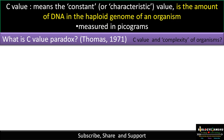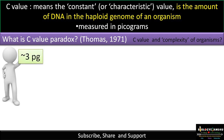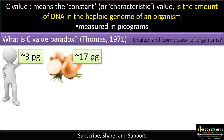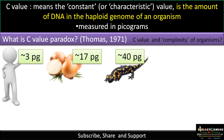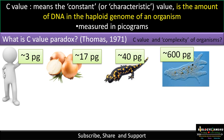In the case of humans, the C value is approximately 3 picograms. In the case of onion, it is 17 picograms — more than 5 times that of humans. In the case of salamander, it is more than 12 times, approximately 40 picograms. And in the case of amoeba, it is more than 200 times — 600 picograms.